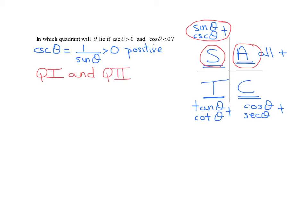So now let's look at the second part of our problem, in which we're told that the cosine of theta is less than 0. That means it is negative. Well, when is the cosine negative?